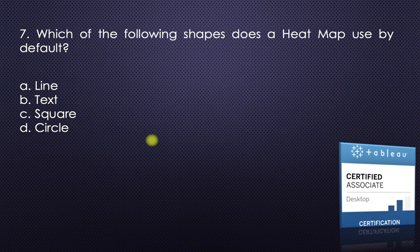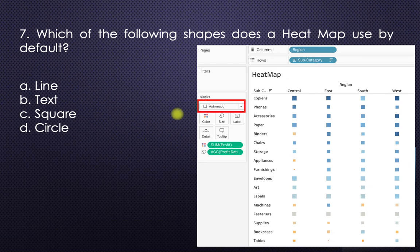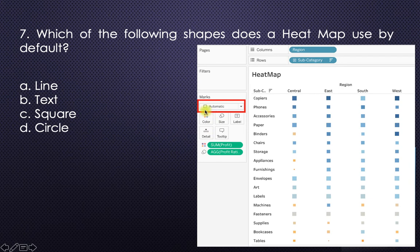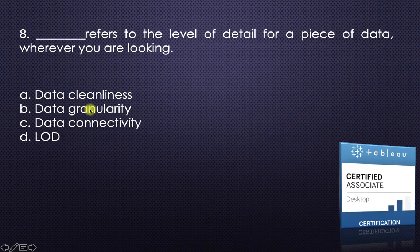Question seven: which shape does a heat map use by default — line, text, square, or circle? If you go into Tableau and create a heat map, you can see in the Marks card that the shape is square, and the visual also shows square shapes. So the answer is square.